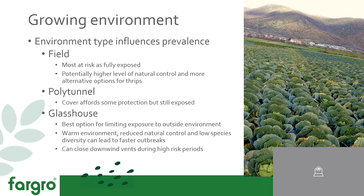There'll still be some natural control and some alternate options in a polytunnel, but you need to be conscious of that. In a glasshouse, it's the best option for limited exposure to the outside environment — you only have small areas that thrips can get in. But the major consideration is that the warm environment within the glasshouse, reduced natural control, and low species diversity can lead to faster outbreaks. Once thrips are in, it can become more severe more quickly. Best practice with glasshouses is to be aware of your surroundings and close vents downwind from farmers' fields when they're harvesting during those high-risk periods.